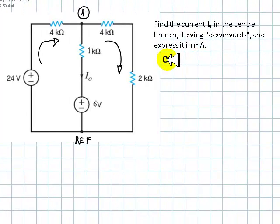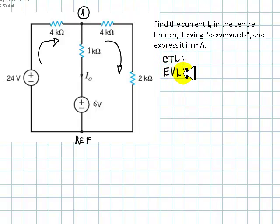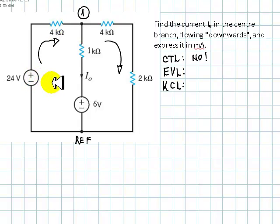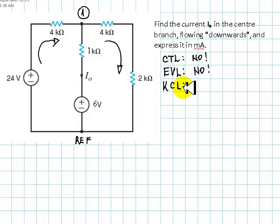In MNA we have three types of equations: equations for controlling variables, equations for evil branches, and KCL equations. Do we have any controlling variable in this circuit? No, there are no dependent sources. Do we see an evil branch? No — there are three branches: one RV branch, another RV branch, and a third R branch. No evil branch equations needed.